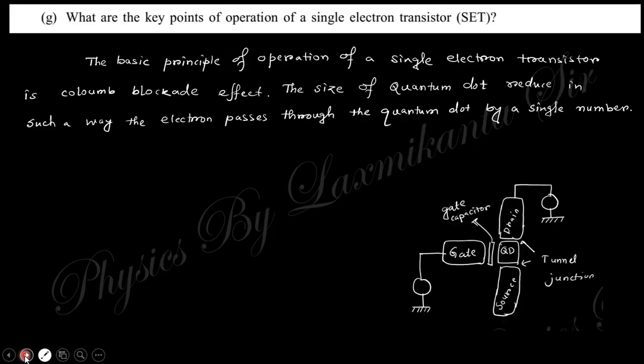Next: What are the key points of operation of a single electron transistor (SET)? The basic principle of operation of a single electron transistor is Coulomb blockade effect. There is a quantum dot where the electron transfers by the tunneling process. After a certain value it's blocked, so the current is zero. Before Coulomb blockade effect, the electron transfers through this quantum dot one at a time. A single electron passes through this quantum dot.